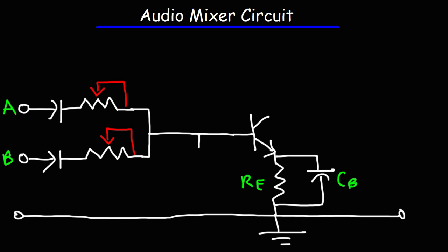Next, we have another resistor, which we'll call R3. And let's call the first potentiometer, which is a variable resistor, R1. And the second one is R2.